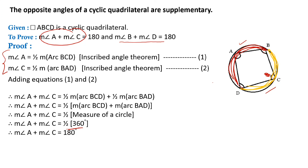Cancelling 360 by 2, we get measure angle A plus measure angle C equals 180 degrees. So I have proved that angle A plus angle C is 180 degrees. Similarly, in the same way, we can prove that measure angle B plus angle D equals 180 degrees.